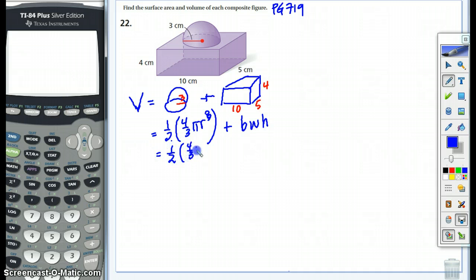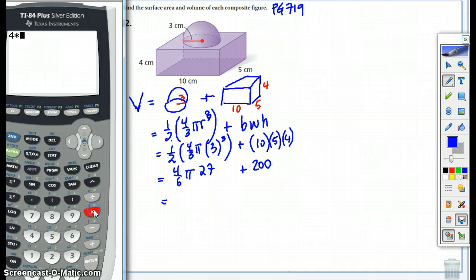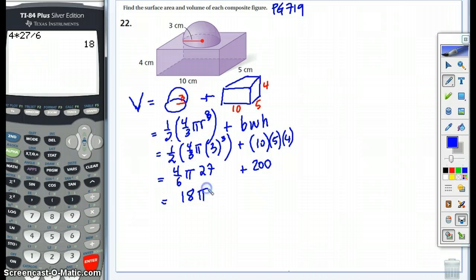Half, 4 thirds pi. And our hemisphere's got a radius of 3. Plus 10 times 5 times 4. As you remember, because this is an exponent right here, we have to do that first before we can combine it with any of that stuff. We will multiply that out and get 4 over 6 pi. And this is 27 plus 20 times 10 is 200. And let's do this. 4 times 27 divided by 6 equals 18 pi.